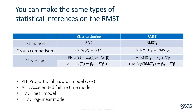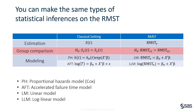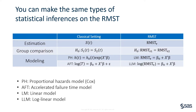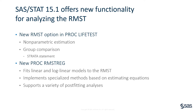You can perform essentially the same types of inferences with respect to the RMST as you can in the classical setting. To compare two groups, you can compare their RMSTs given the same tau value. For regression modeling, you can model the RMSTs via linear or log-linear models. These models enable you to study the effects on the RMST directly. Starting in SAS/STAT 15.1, new dedicated features are available for analyzing the RMST. You can use the RMST option in the LIFETEST procedure to perform nonparametric analysis, and also use the new RMSTREG procedure to fit linear and log-linear models of the RMST.